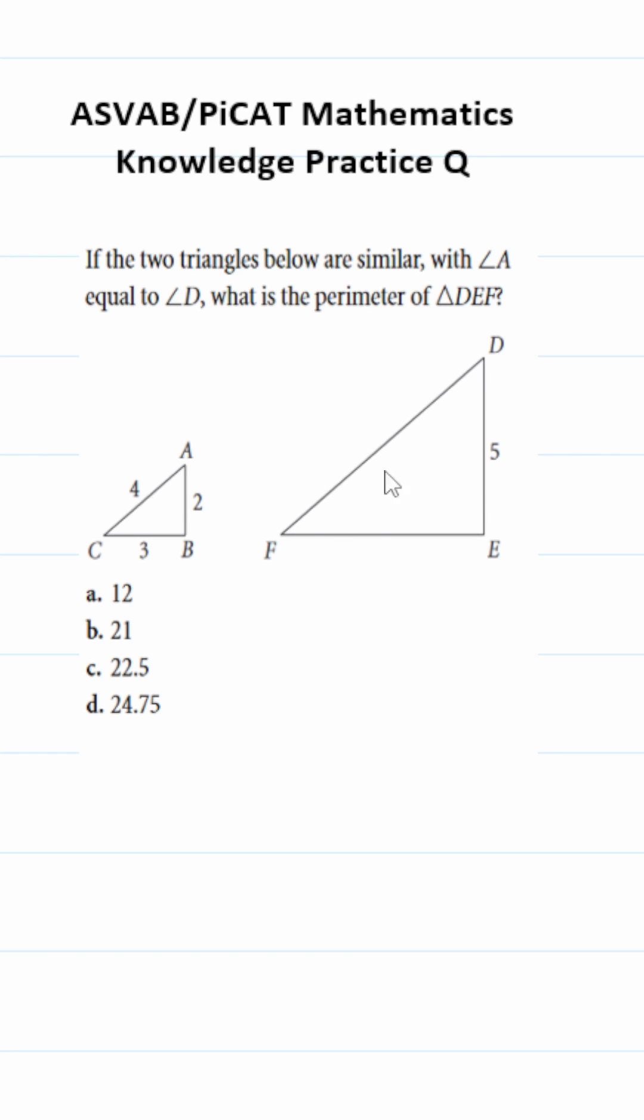ASVAB PiCAT Math Knowledge Practice Test question. We're trying to find the perimeter of this big triangle. To find the perimeter of any regular polygon, including a triangle, you simply add up all of its sides.